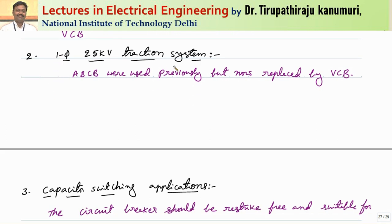For electric traction, there are two aspects: the traction substation supplies power at single-phase 285 kV, and there is also a circuit breaker inside the locomotive collecting current from the supply. Whenever you want to disconnect from the supply, the circuit breaker operates first. Previously, air blast circuit breakers were used for these applications, but nowadays they are replaced by vacuum circuit breakers. The advantage of vacuum circuit breakers is very small size, less maintenance, and far more efficiency when compared to air blast circuit breakers.